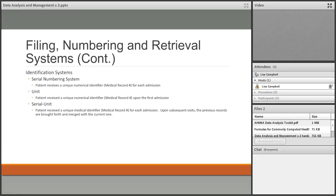The unit numbering system is the most common. A patient receives one medical record number on their very first visit, and every subsequent admission uses that same number. This does require the registration department to look up and find that previous admission, which doesn't always happen — patients may have changed names, data entry errors can occur. But it is the best system because the patient has one medical record number, one chart, and all new information is added to that original chart.